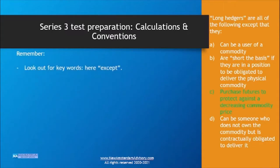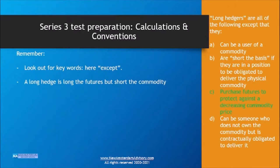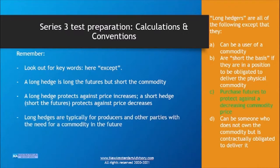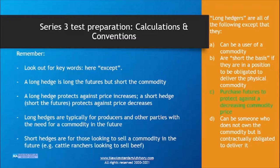Key takeaways: always look for the keyword 'except.' A long hedge means long the futures but short the commodity, and protects against future price increases. A short hedge means short the futures and protects against future price decreases. Long hedges are typically for producers or parties needing a commodity in the future who want to hedge against a price increase. Short hedges are for those looking to sell a commodity in the future — for example, cattle ranchers looking to sell beef — hedging against future price decreases.